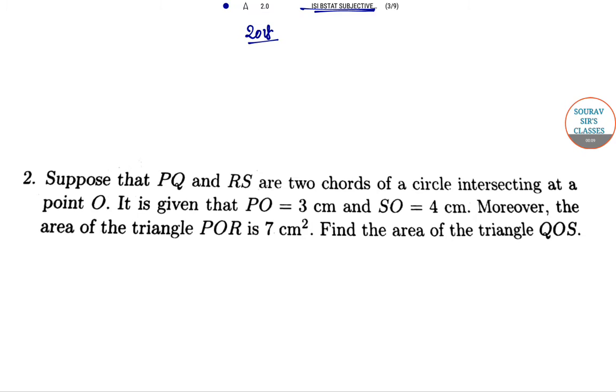So we are given, suppose that PQ and RS are the two chords of a circle intersecting at point O. So here these are PQ, and RS intersecting at O.